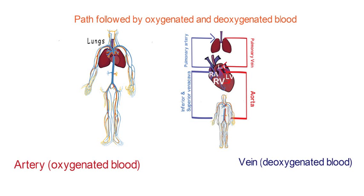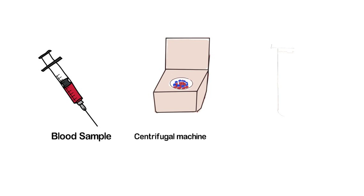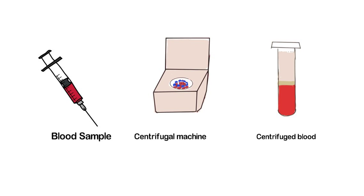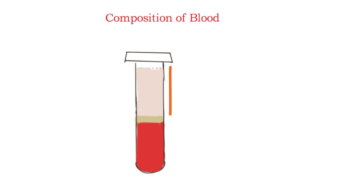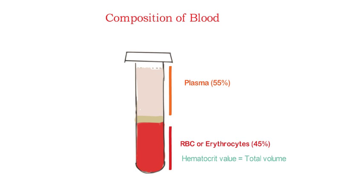If we take a sample of blood and centrifuge it at high speed, three separate layers are obtained. The topmost clear solution, occupying about 55% of total blood volume, is called plasma. The thick dense bottom red layer is RBC or erythrocytes, occupying about 45% — this is also known as the hematocrit value, with normal values of 45% for men and 40% for women. Less than this value indicates anemia. In between, a very thin buffer layer of platelets and leukocytes occupies less than 1% of total volume.